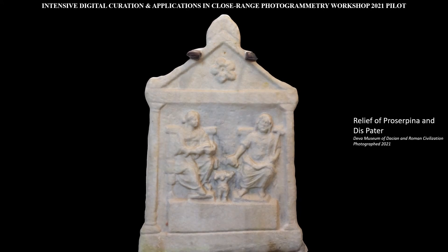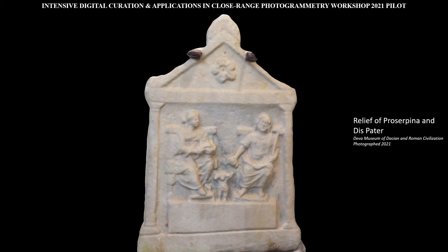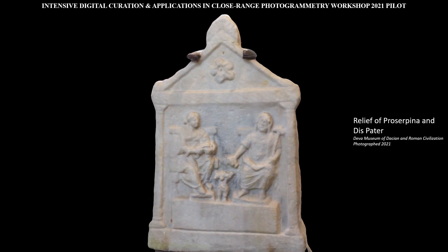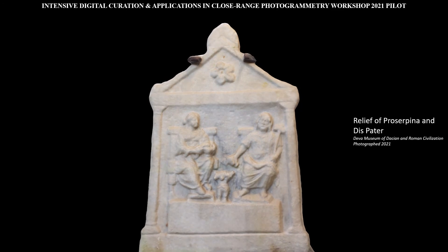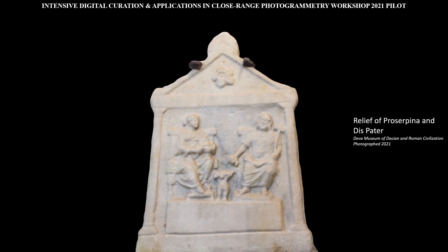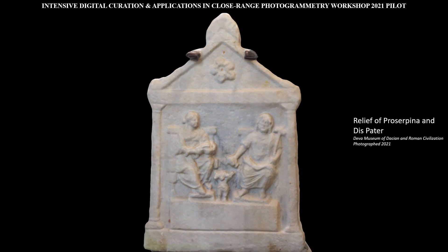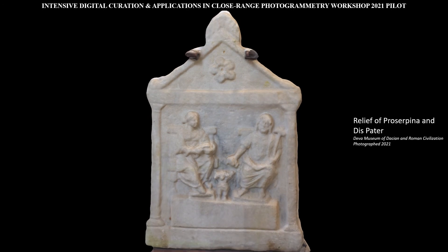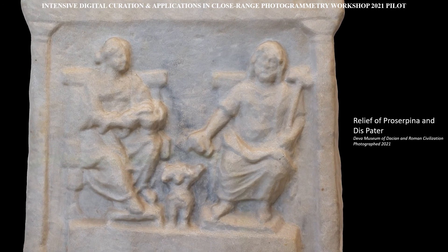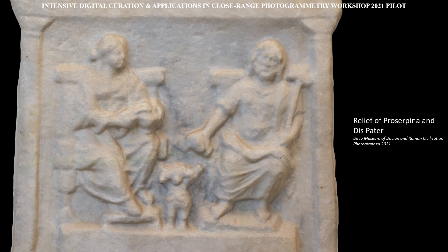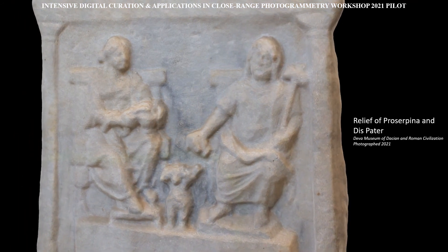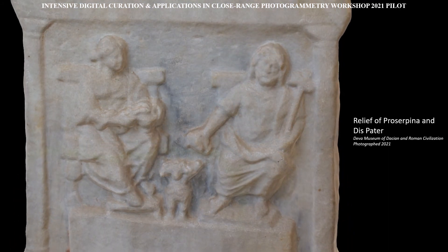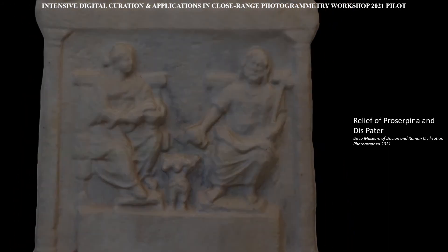This relief depicts the god Dyspater and his consort, the goddess Proserpina. Dyspater is closely associated with Pluto in Roman mythology and with Hades in Greek mythology. While Proserpina is another name for Persephone in Greek mythology, Dyspater is the god of wealth and death, while Proserpina is the goddess of spring. The abduction of Persephone by Hades is mentioned briefly in Hesiod's Theogony and is described in depth in the Homeric Hymn to Demeter, and is usually considered to be an etiological myth explaining the changing of the seasons.